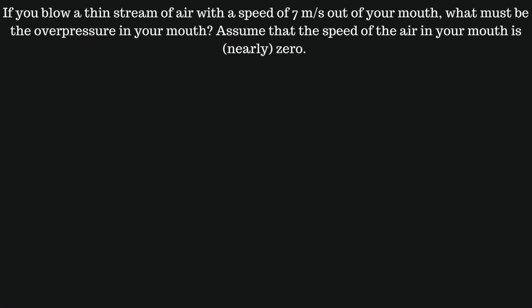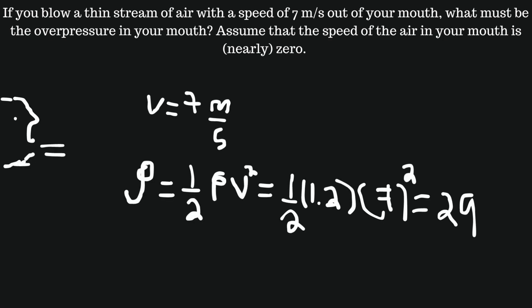Now let's do some examples. If you blow a thin stream of air with a speed of 7 m/s out of your mouth, what must be the overpressure in your mouth? Assume that the speed of the air in your mouth is nearly zero. Now since the height is zero, we can solve for pressure in Bernoulli's equation and find that the overpressure is just 29.